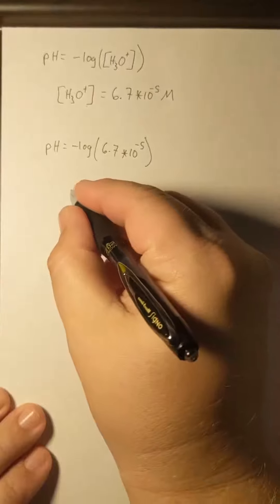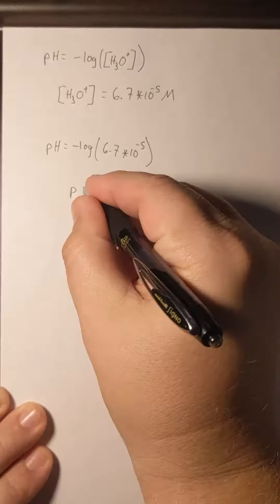And so we'll go over and run this through the calculator, and we get a pH of 4.17.